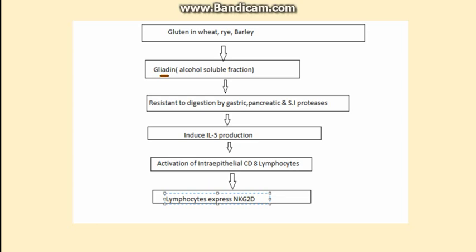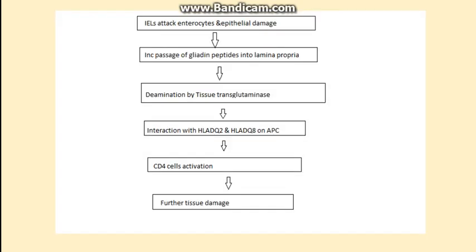Because gliadin is resistant to digestion, it induces the production of interleukin-5. The interleukin-5 production further stimulates the activation of intraepithelial CD8 lymphocytes. This is of great diagnostic importance, as the activated CD8 lymphocytes attack the enterocytes and lead to epithelial damage.